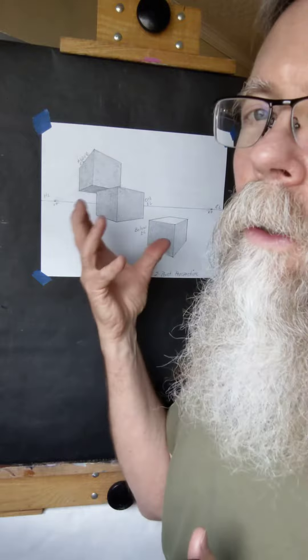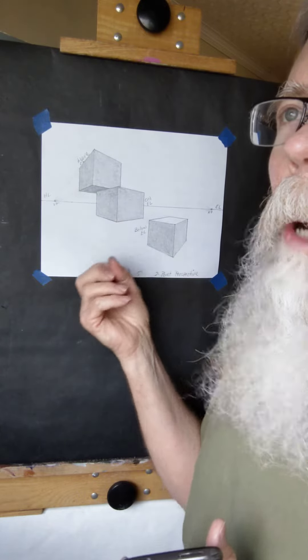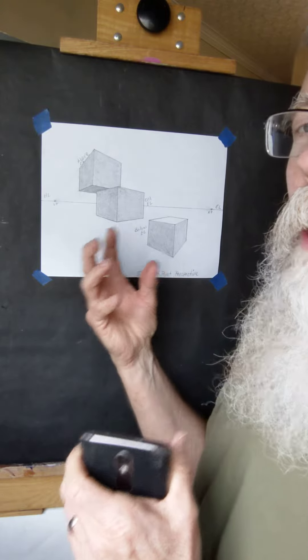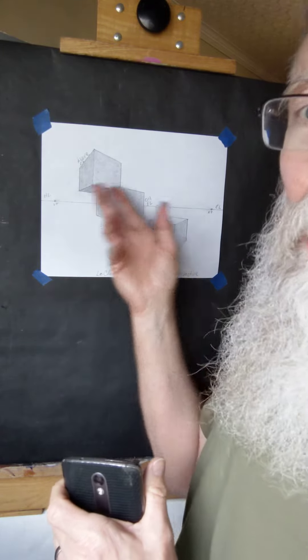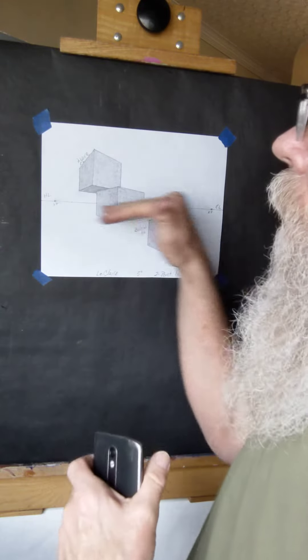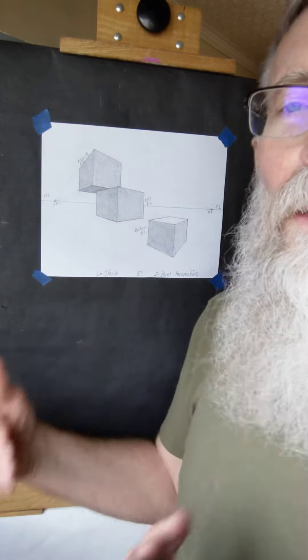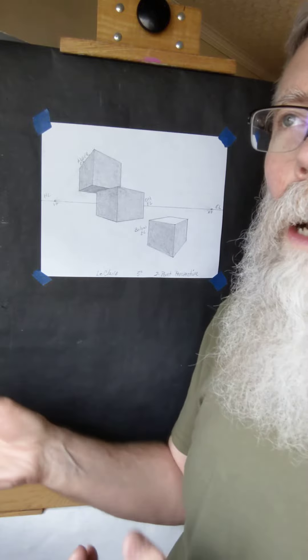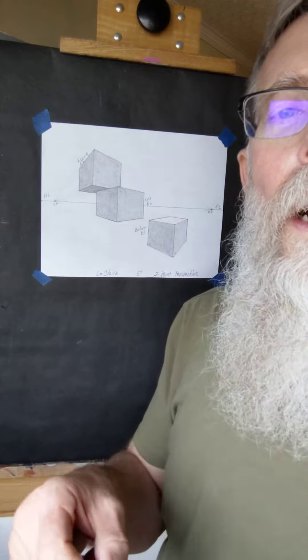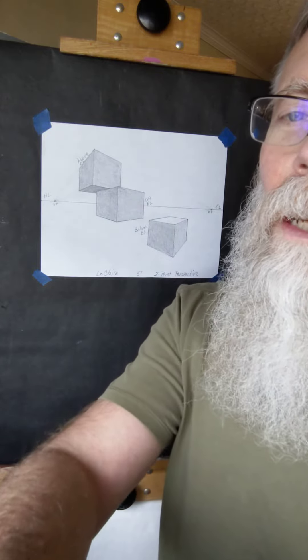You're going to be using a two-point perspective box as a building in your landscape drawing. You might include many different buildings at different heights, but they'll all use the same eye level and horizon line. Knowing these skills will make your landscape drawing more successful. I'll talk to you soon about our next steps.